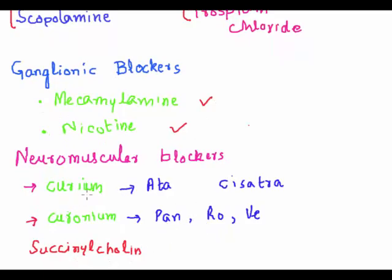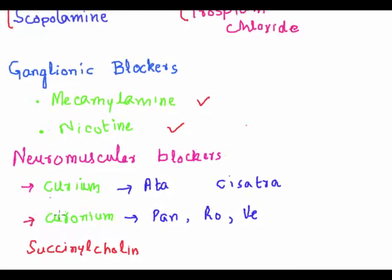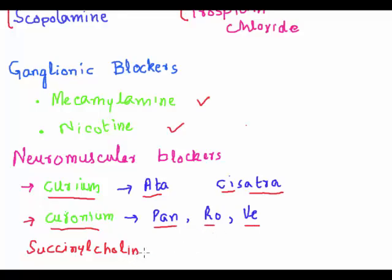Neuromuscular blockers are divided into two major categories: the '-curium' group and the '-curonium' group. In the curium group we have atracurium and cis-atracurium. In the curonium group we have pancuronium, rocuronium, and vecuronium. Finally, there is succinylcholine. These are the anticholinergic drugs.